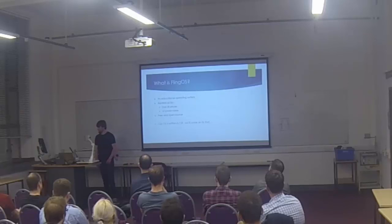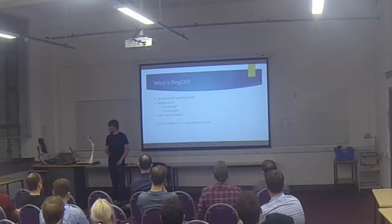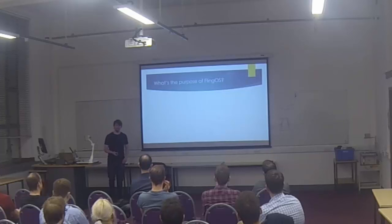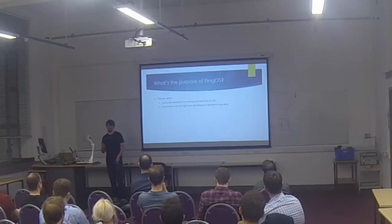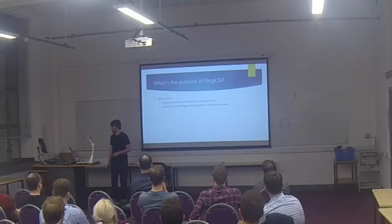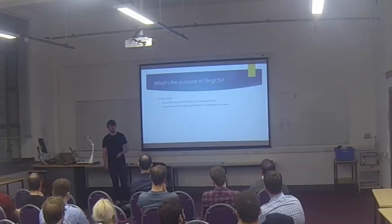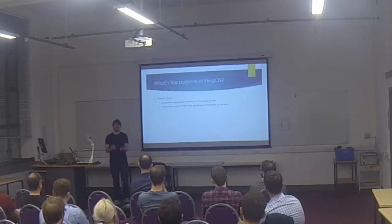The OS is written in C# — that's the big thing this evening. To explain why we use C#, I have to explain a little bit of what the purpose of FlingOS is. It's about education, and our primary aims are to provide resources for teaching and learning operating systems development, as well as low-level development. It's to provide a way for high-level developers to transition to low-level development — taking what you already know and using that as a platform for learning low-level development and operating systems.